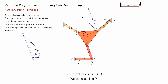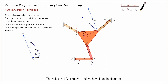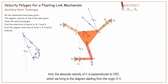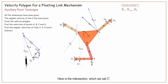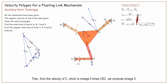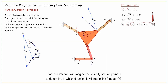The next velocity is for point C. We can relate it to D. The velocity of D is known and we have it on the diagram. The velocity of C with respect to D is perpendicular to CD, which we bring to the diagram at the end of velocity of D. And the absolute velocity of C is perpendicular to O5C, which we bring to the diagram starting from the origin OV. Here is the intersection, which we call C prime. We draw the velocity of C with respect to D, and then measure its magnitude. We do the same for the velocity of C. Then, from the velocity of C, which is omega 5 times O5C, we compute omega 5. For the direction, we imagine the velocity of C on point C to determine in which direction it will rotate link 5 about O5.